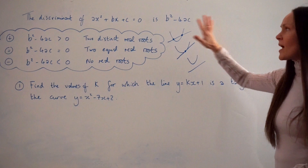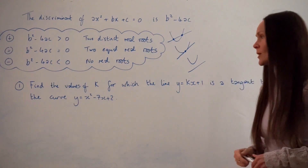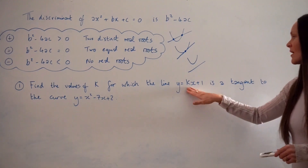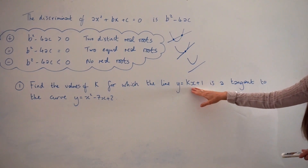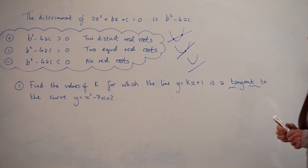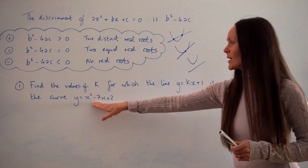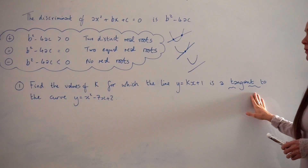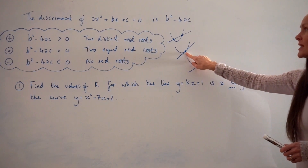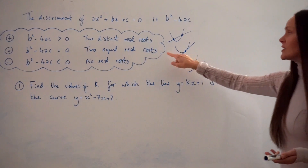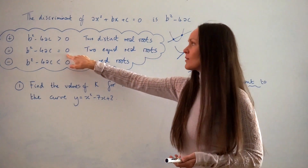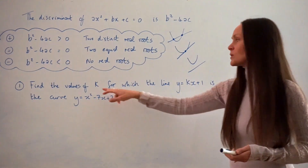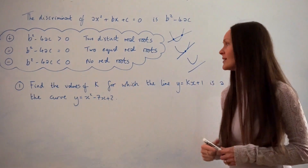So we're going to bear that in mind and use it to help us answer some questions. In question number one, it says: find the values of k for which the line y equals kx plus 1 is a tangent to the curve y equals x squared minus 7x plus 2. Because the straight line is a tangent to the curve, it will look something like this sketch. It means that when we calculate the discriminant, it has to equal zero, which will help us find the values of k.